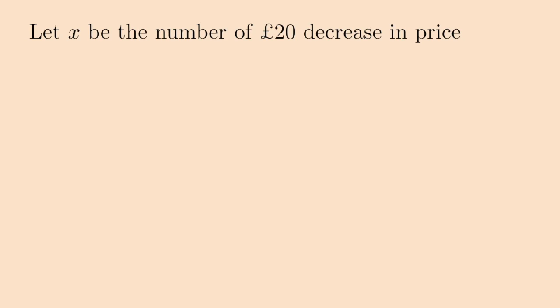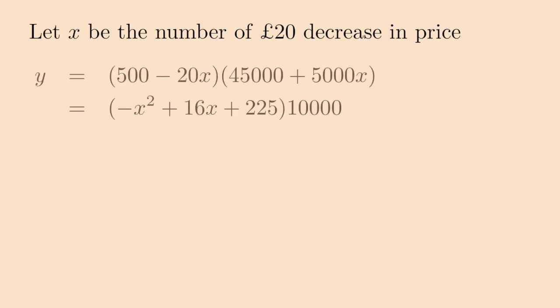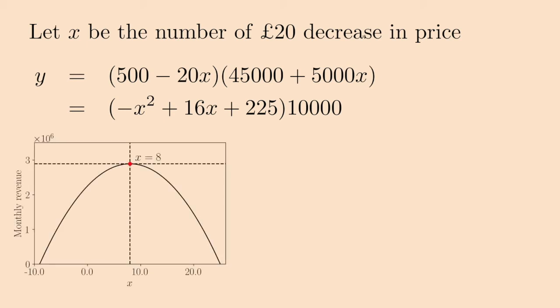Let x be the number of £20 decrease in price, and each decrease will result in the sales of 5,000 more handsets per month. Then, the monthly revenue can be written as the following quadratic equation. The maximum of the graph of this equation yields the value of x equals 8.